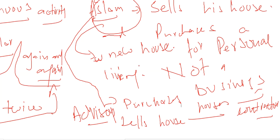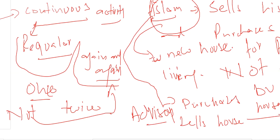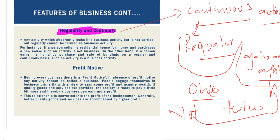An activity which apparently looks like a business activity but is not carried out regularly cannot be termed a business activity. For example, if a person sells his residential house for money and purchases a new house, such activity is not a business. On the other hand, if a person earns his living by purchasing and selling buildings and houses on a regular and continuous basis, it will become a business.